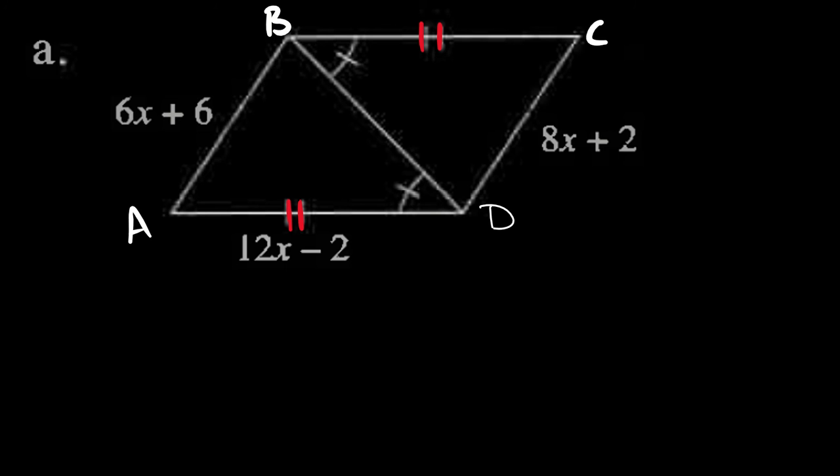You can see that AD is congruent to CB - that's given from the diagram with the double tick marks. Also, angle ADB is congruent to angle CBD. The other thing is they both share side BD. BD is congruent to itself because of the reflexive property, and that side is in both triangles.